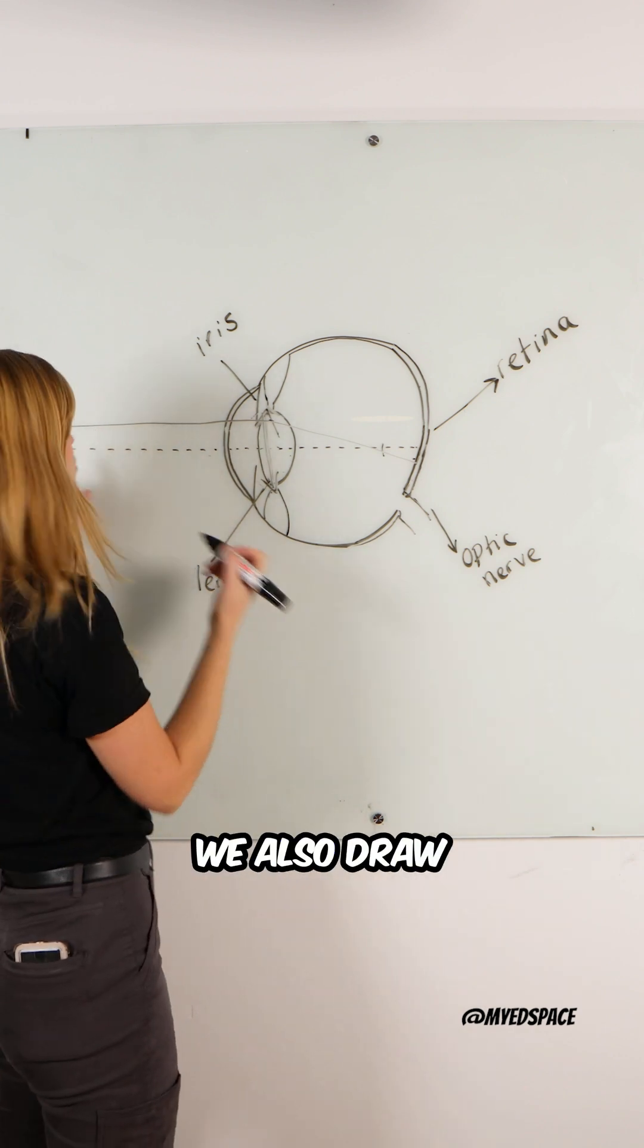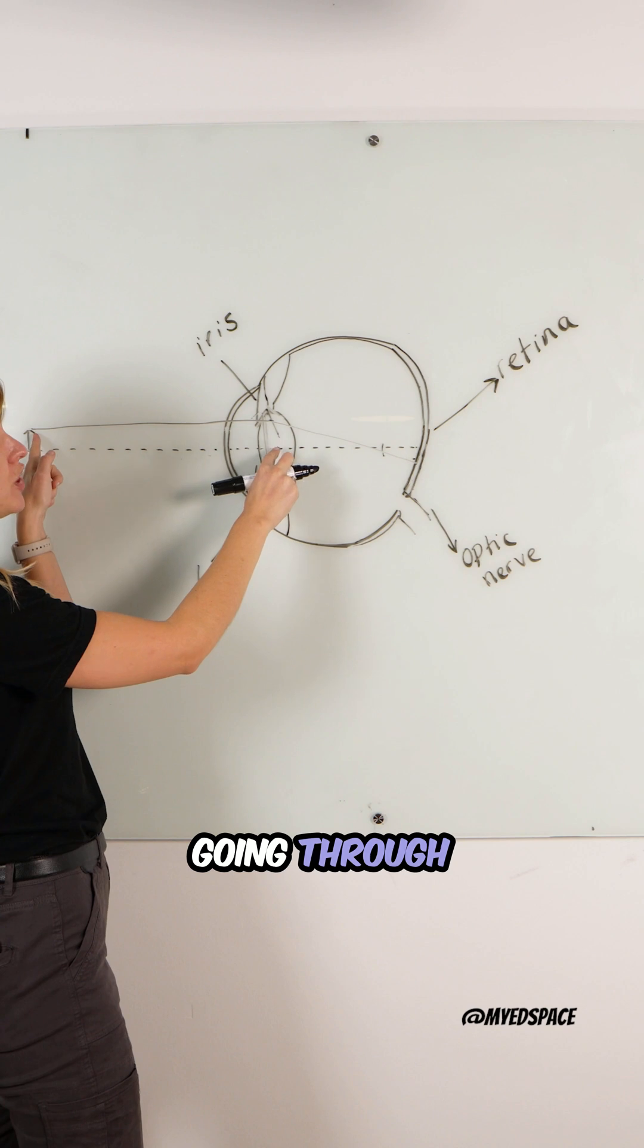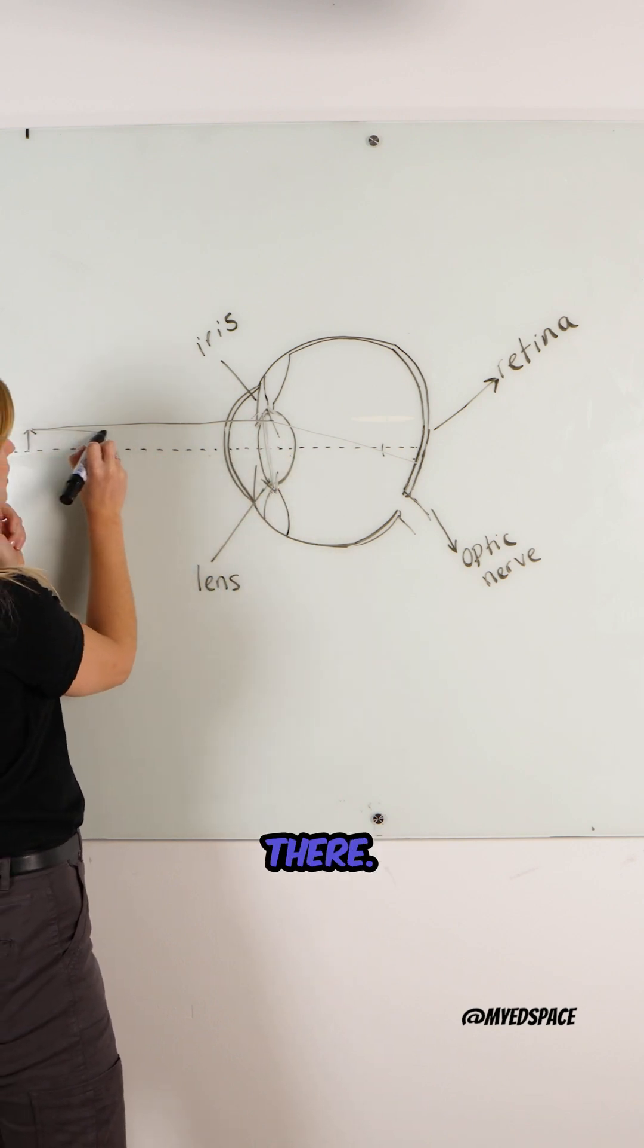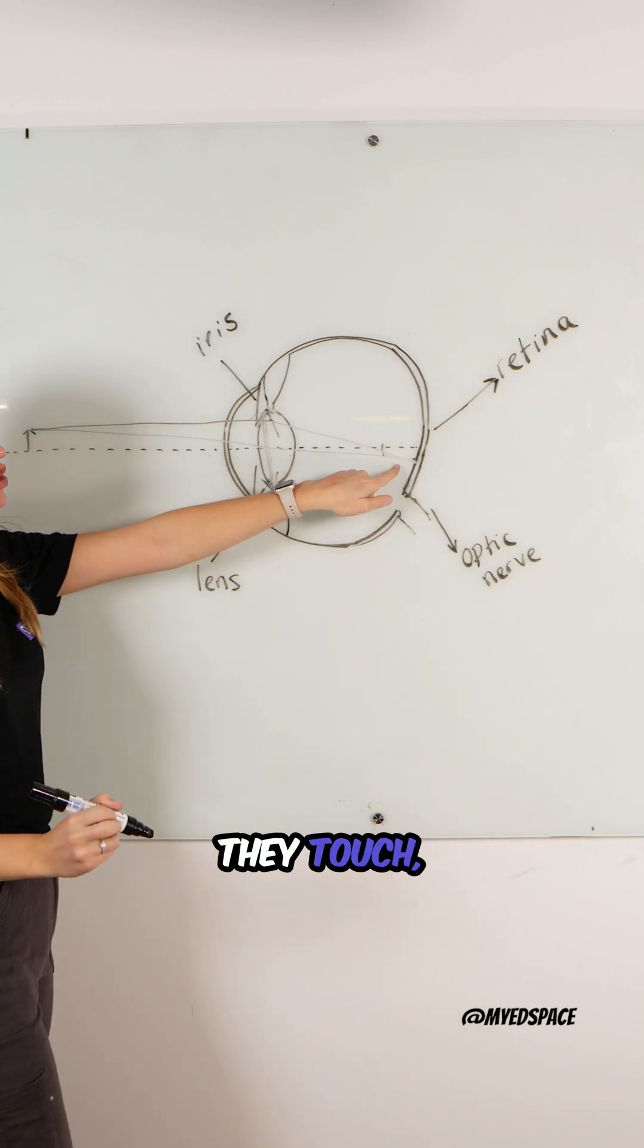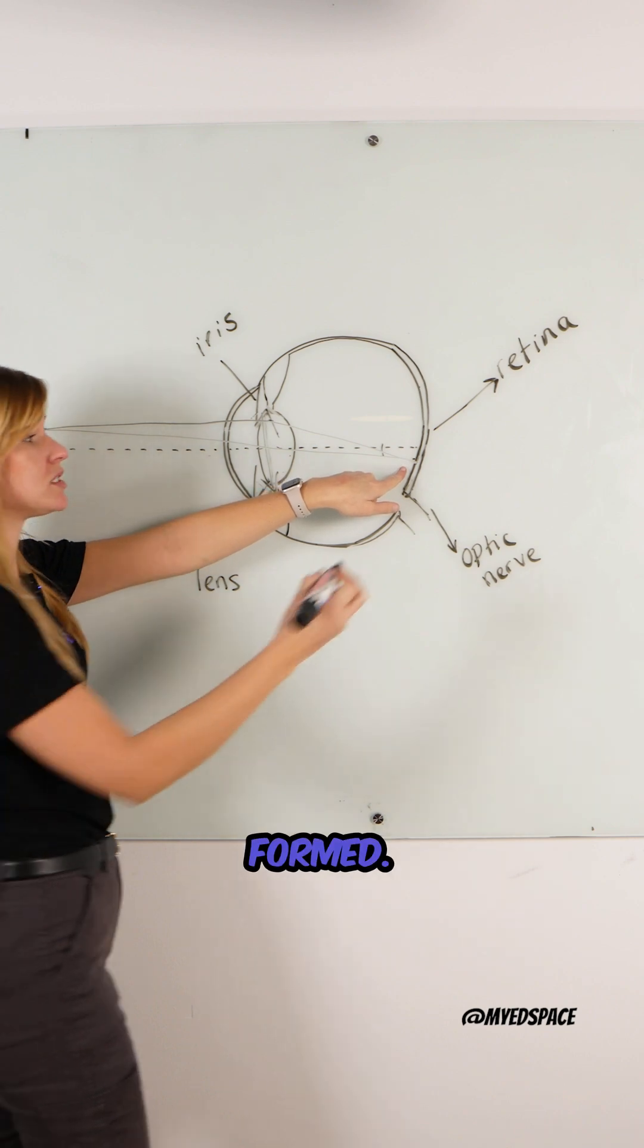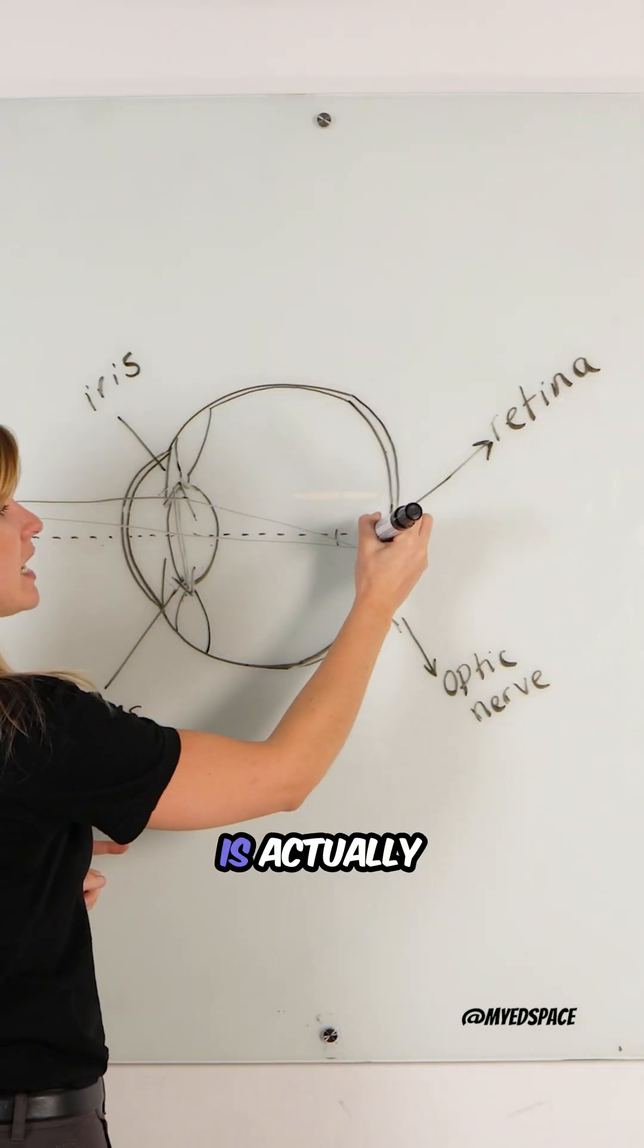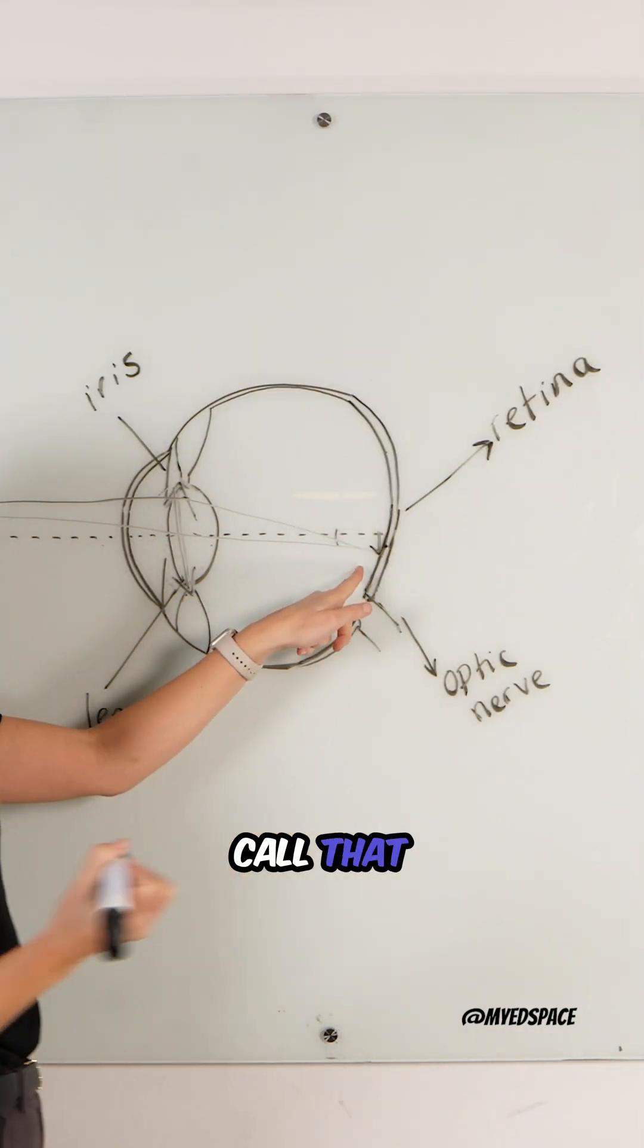In physics we also draw another ray going through the middle of the convex lens. You have another ray there, it's going to go through the middle of your convex lens, and the point where they touch, that's the point where your image is formed. What we can see here is the image is actually going to be upside down, and we call that inverted.